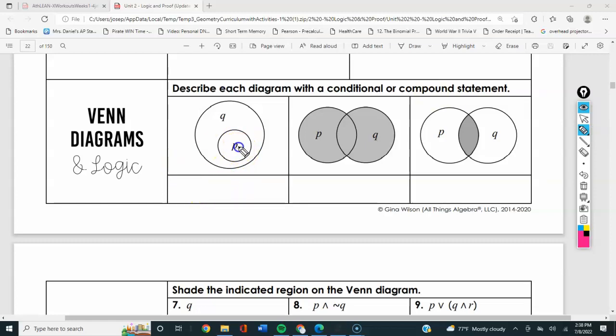Alright, this says for every P is in Q. That actually means if P then Q, because every member of P is in Q. That's that conditional statement we talked about earlier.